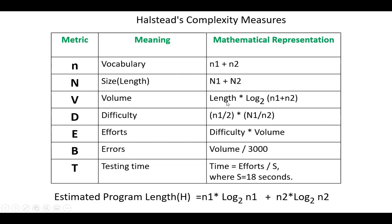V volume equals length, which is capital N, multiplied by log to the base 2, n1 plus n2. D difficulty, n1 over 2 multiplied by capital N2 over n2. E effort equals difficulty D multiplied by V volume. B errors equals volume divided by 3000.